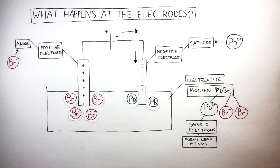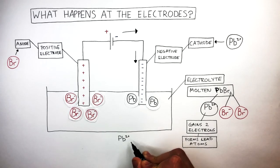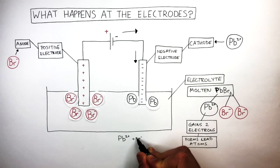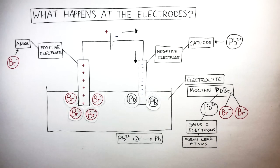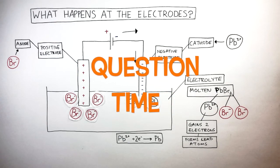Pure lead which was once bonded to bromide ions in the lead bromide. We can show what's happened at the cathode using a half equation. Pb2+ has gained two electrons to form Pb. So whenever you're explaining what's happened at the electrodes, all you're doing is answering has the ion gained electrons or lost electrons and what has formed. It's question time. Attempt these questions to check your understanding.